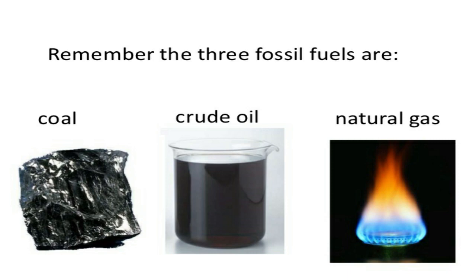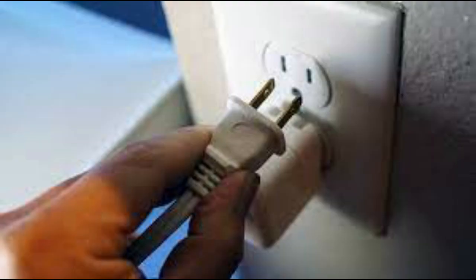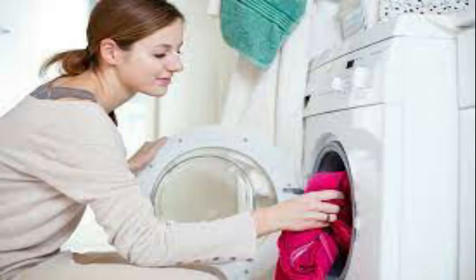Coal and oil are important energy resources. Coal is a black material that is used as fuel. Oil, which is also known as petroleum, is a black and thick liquid that is used to make gasoline, diesel, and jet fuel. Natural gas goes with oil and coal. Just like coal and oil, it is also used as fuel to produce electricity. People use much electricity, so more and more fuels are used up.